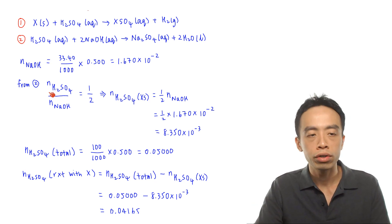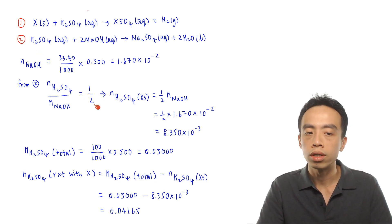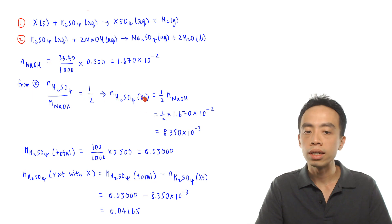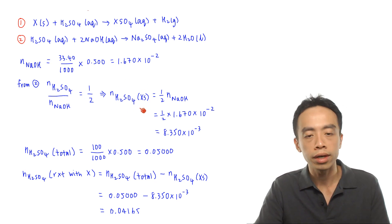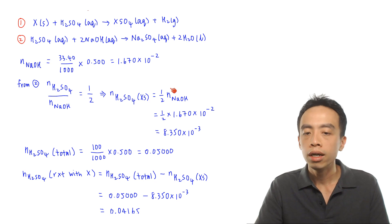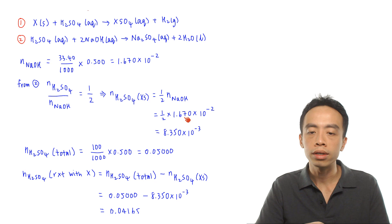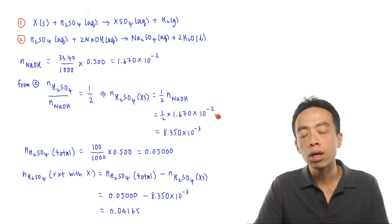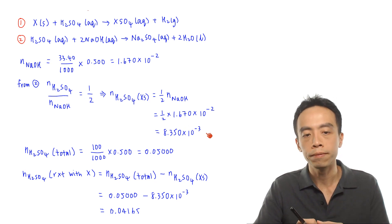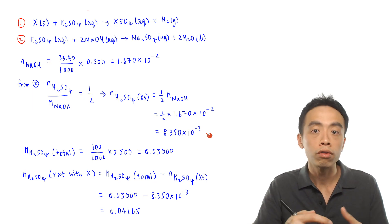From the second reaction, the mole ratio of H₂SO₄ to NaOH is 1:2. Therefore, the moles of H₂SO₄ in excess that reacts with sodium hydroxide = ½ × 1.670 × 10⁻² = 8.350 × 10⁻³ mol. So we have determined the moles of H₂SO₄ in excess.